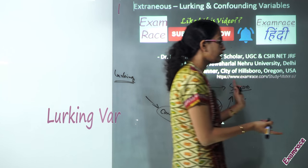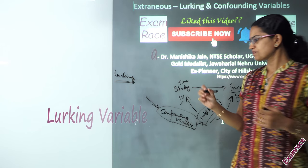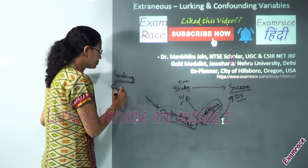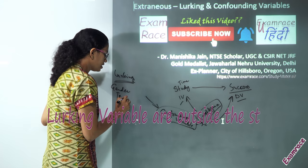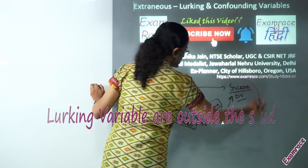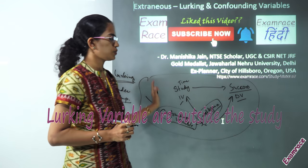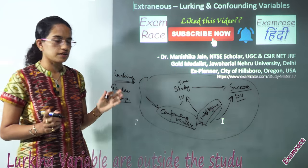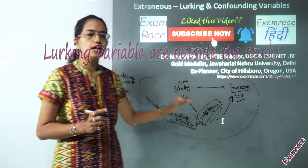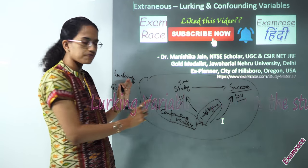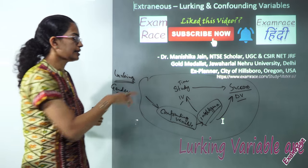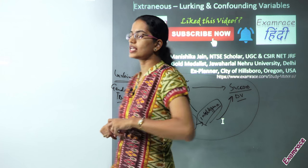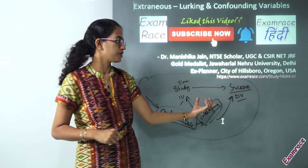The next type is the lurking variable. Lurking variables are those variables kept outside the study area — for example, gender or temperature. These are known as lurking variables. While researching a relation between a dependent and independent variable, there could be numerous variables present; some could be confounding and others could be lurking, and we have to identify what kind is present.